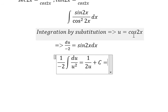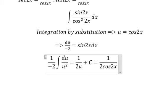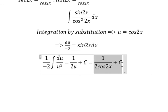Finally, we substitute back: u equals cos 2x, so the answer is 1 over 2 cos 2x. This is the final result. Thank you for watching!